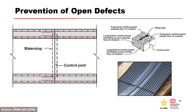This slide shows a few different methods that we can use to prevent open defects from occurring. On the left, we have a control joint used in reinforced cast-in-place concrete conduit construction, with longitudinal reinforcement being continuous through the joint. On the right, we have an example of a water stop placed across the joints of conduits to stop water from coming through the joint. On the top right is a typical water stop detail, and on the bottom right is a typical water stop used in conduit construction.